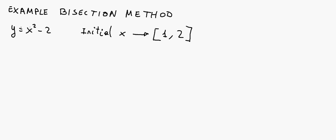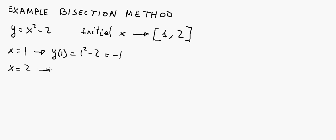The first thing we need to do is calculate the function, the y value, at each of these two initial points. So for x equals 1, y at 1 equals 1 squared minus 2, so it's 1 minus 2 is minus 1. We do the same for the second point, for x equals 2. The function at that point is 2 squared minus 2, that's 4 minus 2, which is 2.